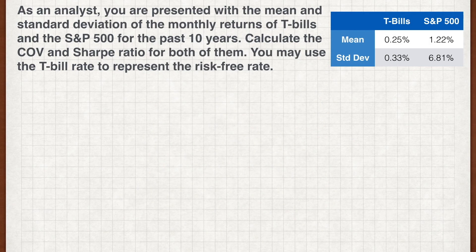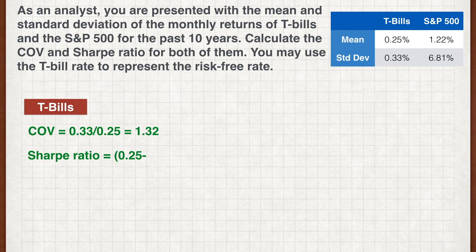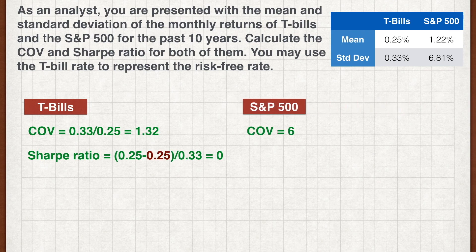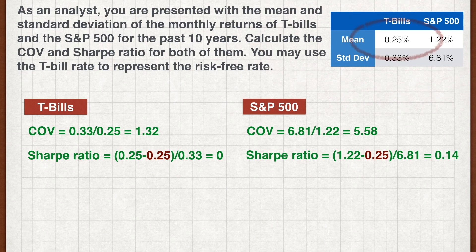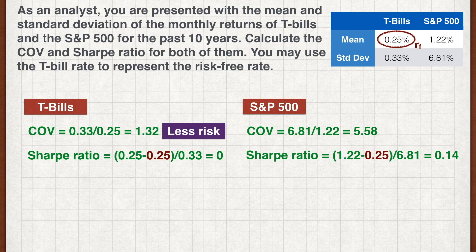Working out the figures should be a straightforward application of the formulas. Note that the returns of the T-bills are used as the risk-free rate — this is often the case. If in the exam you're not given a risk-free rate but the T-bill rate is shown, you may use the T-bill rate as the risk-free rate. Plugging in the figures, we get a coefficient of variation of 1.32 for T-bills versus 5.58 for the S&P 500. We can infer that T-bills are the less risky of the two, given that the variance per unit of return is lower.